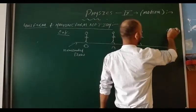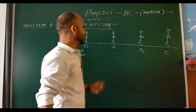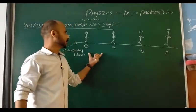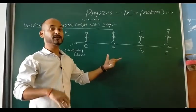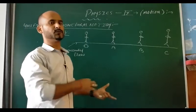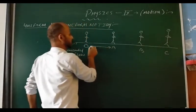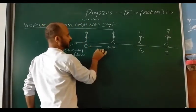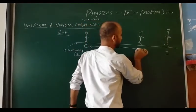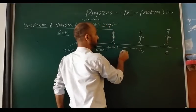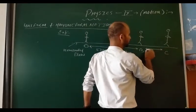Again, after taking some time, the object reaches point C. During this motion the object covers different positions. Suppose during O to A it covers 5 km distance. Again, A to B it covers a distance of 5 km. Again, B to C it covers a distance of 5 km.